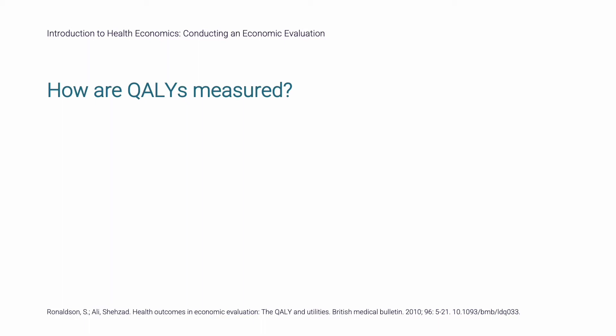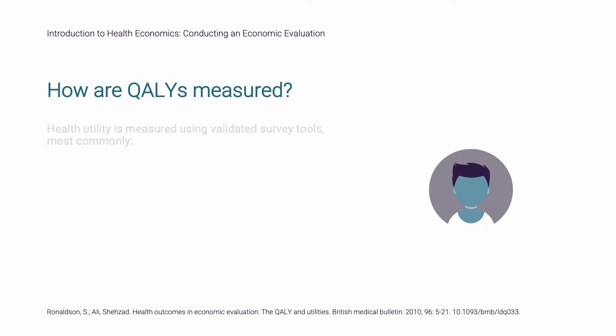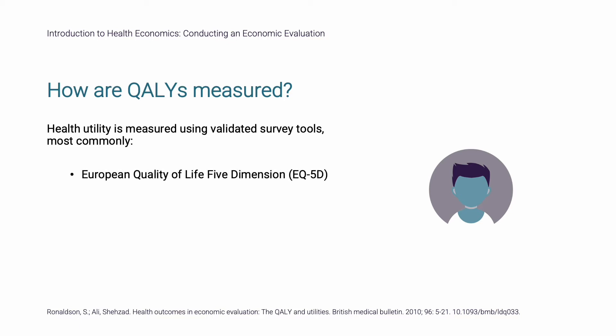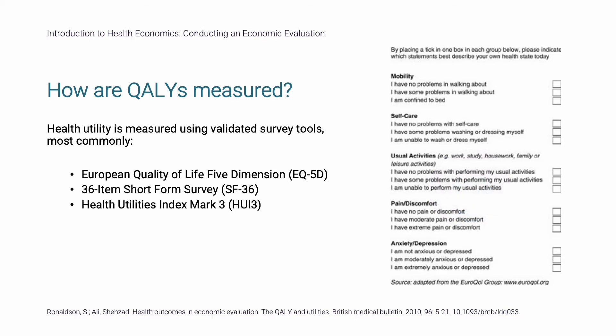Quality of life, or health utility, is typically measured by asking people about how they feel. There are three commonly used validated survey tools for measuring health-related quality of life: the European Quality of Life Five Dimension (EQ-5D), the 36-item Short Form Survey (SF-36), or the Health Utilities Index Mark III (HUI3). Increasingly, these survey tools are being incorporated into clinical trial design to enable economic evaluations. The questions asked in the EQ-5D are shown as an example.